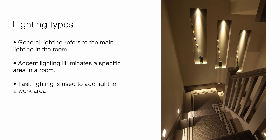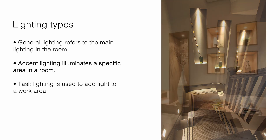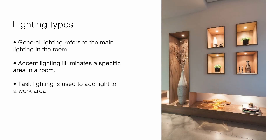Accent lighting illuminates a specific area of a room. Think of a reading chair, a kitchen island, a dining room table, or a beautiful piece of art that you want to highlight. Accent lighting targets those areas and provides enough light to cover that element without overwhelming it.